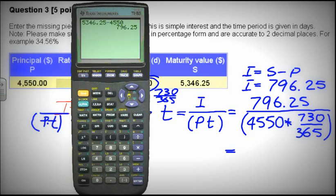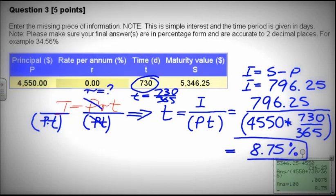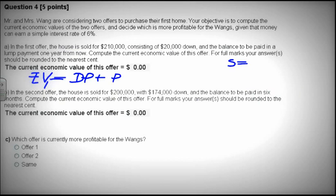First, capital I is equal to future sum minus principle. So subtracting, we have $5,346.25 minus $4,550 gives us $796.25. And then plugging into the formula, divided by P times T: $4,550 times 7.30. And that gives us 0.0875 times 100, that gives us 8.75%.